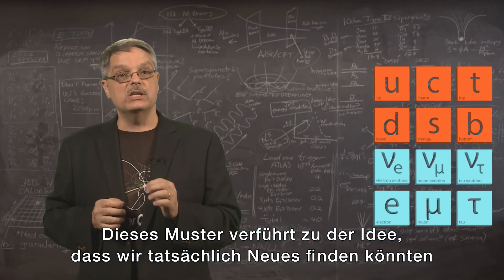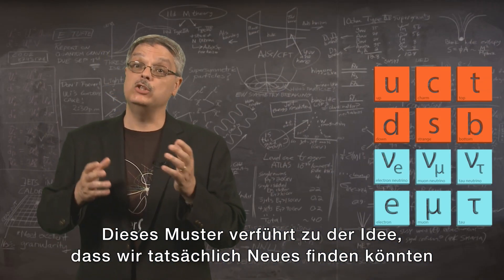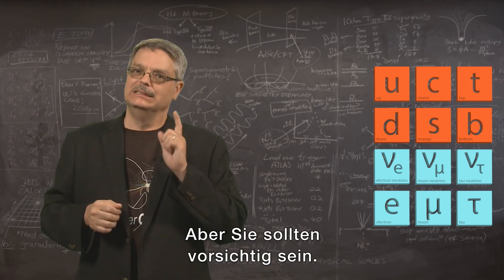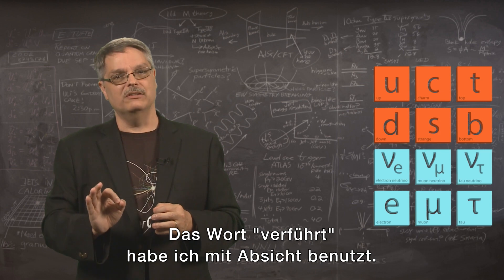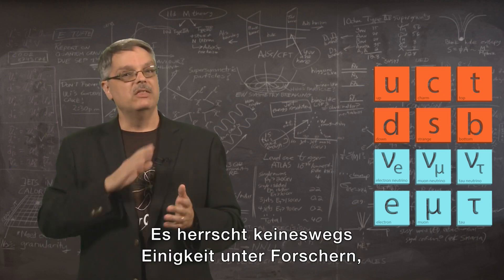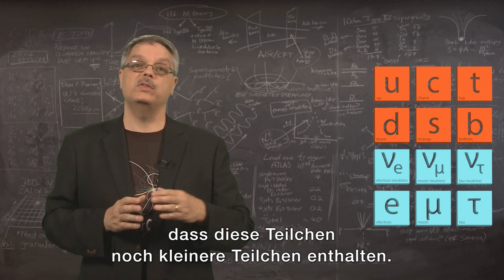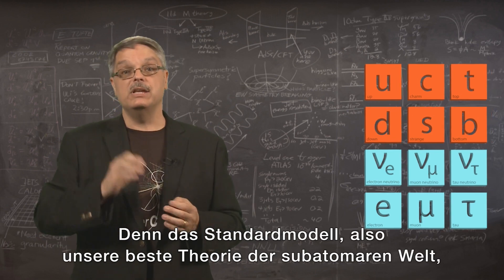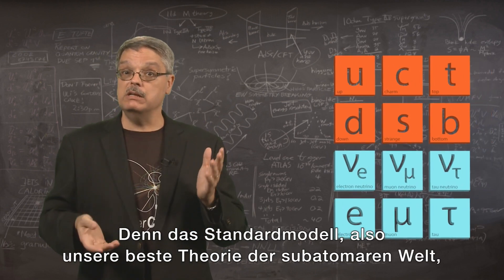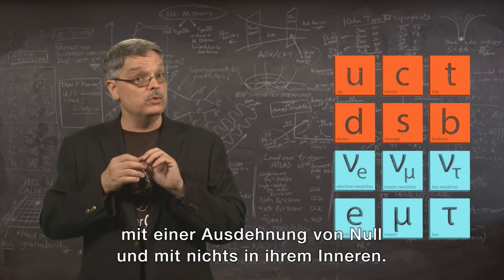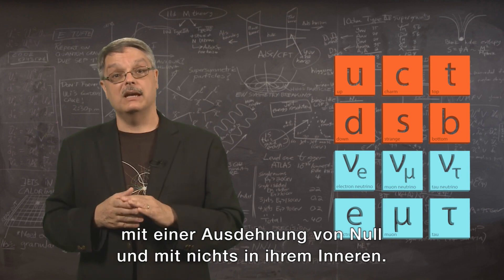This pattern is suggestive of the idea that perhaps something new is to be found inside quarks and leptons. But you should be careful. I use the word suggestive on purpose. There is no agreement by scientists that these particles must contain smaller particles within them. Indeed, the standard model, which is our best theory of the subatomic world, treats the quarks and leptons as point-like particles with zero size and nothing inside them.